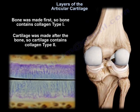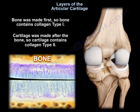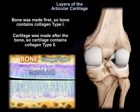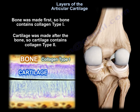Bone was made first, so bone contains collagen type 1. Cartilage was made after the bone, so cartilage contains collagen type 2.